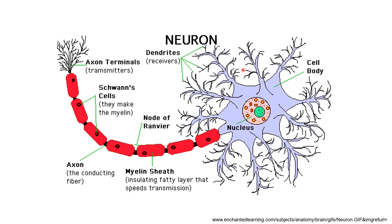Most neurons have a cell body, which contains the nucleus. There are branches coming out of the cell body called dendrites — these are the branches that receive information from other neurons. Then there is typically one long branch that goes out called the axon, which branches out into axon terminals where this neuron transmits information to its follower neurons. This axon may be covered by a layer called the myelin sheath, which helps in insulating the neuron.